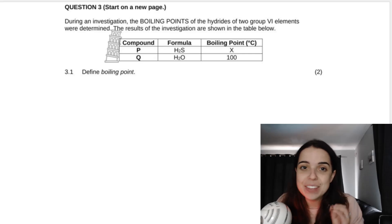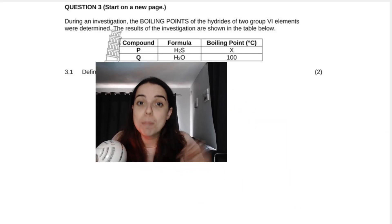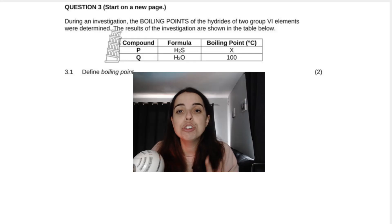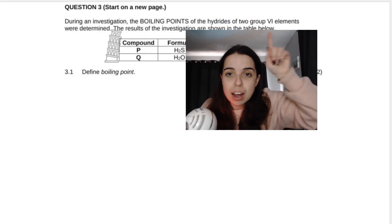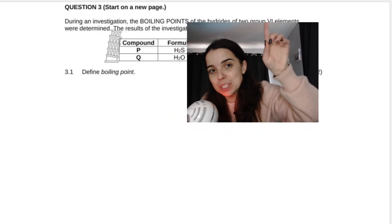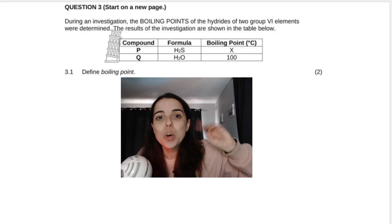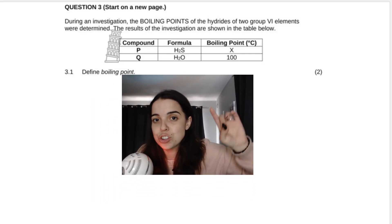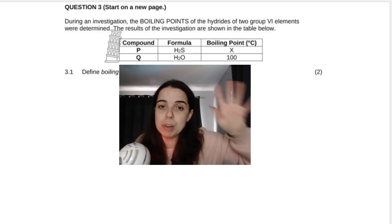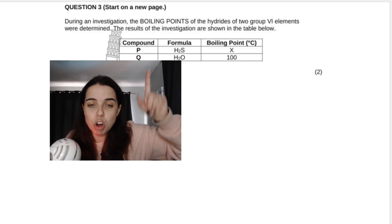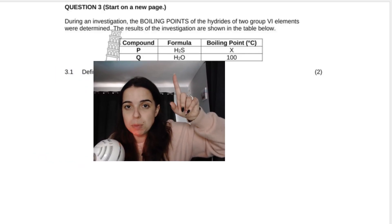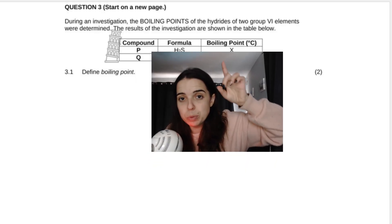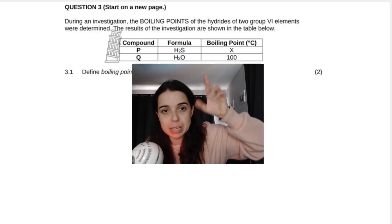The question says: during an investigation, the boiling points of the hydrides of two group VI elements were determined. The results of the investigation are shown in the table. We've got compound P and Q — those are their formulae — and those are the boiling points. We don't have the boiling point of compound P.